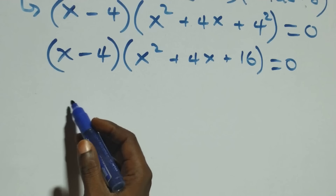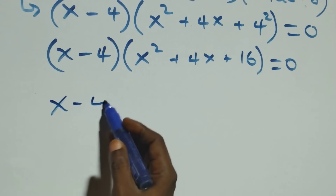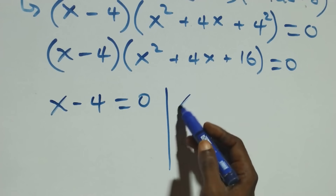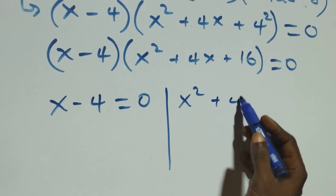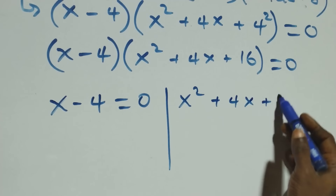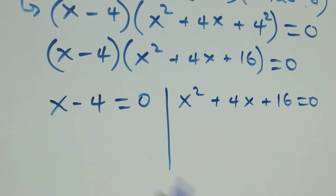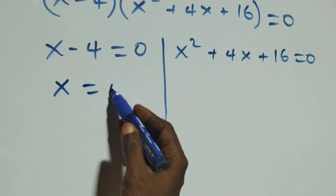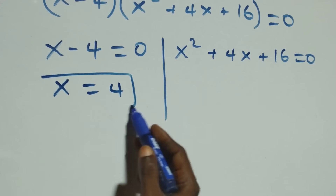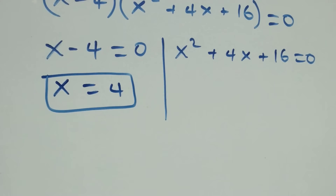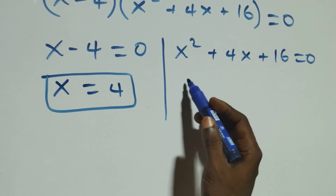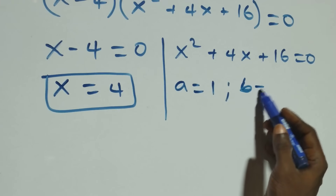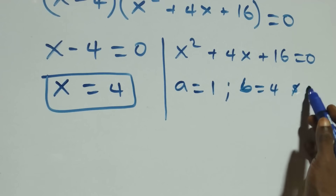We have either x minus 4 equals zero, or x squared plus 4x plus 16 equals zero. Solving the first factor gives x equals 4, which is also a real solution. On the other side, we have a quadratic equation where a equals 1, b equals 4, and c equals 16.